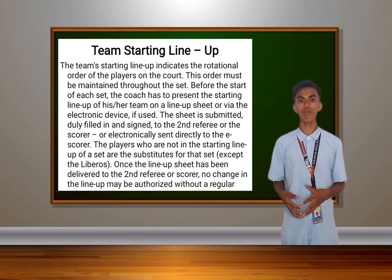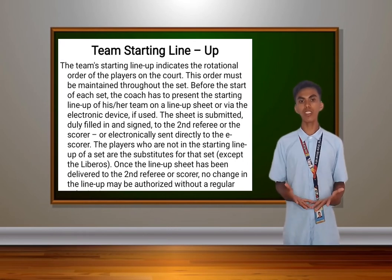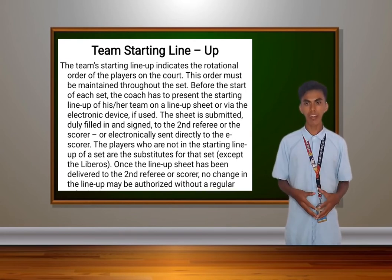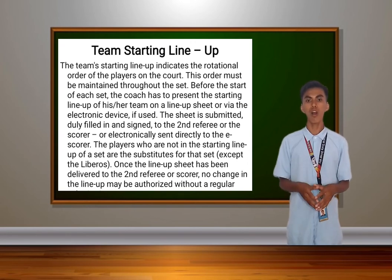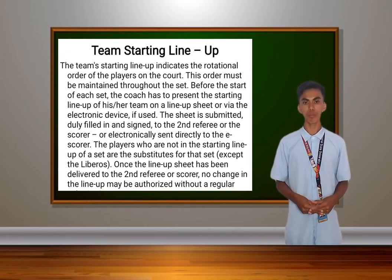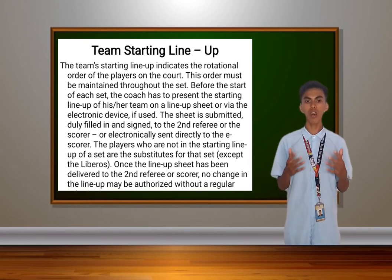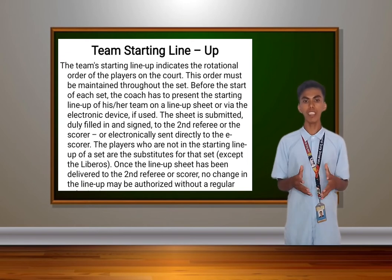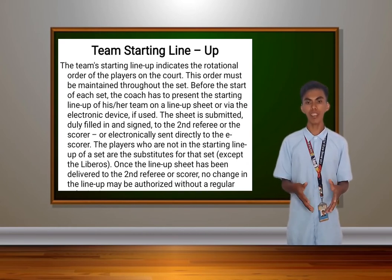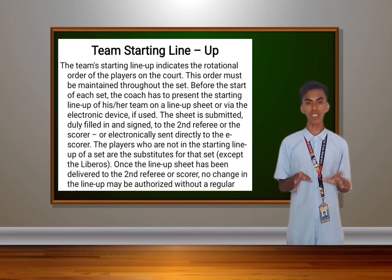Next is the team starting line-up. The team starting line-up indicates the rotation order of the players on the court, and this order must be maintained throughout the set. Before the start of each set, the coach has to present the starting line-up on a line-up sheet or via electronic device if used. The sheet is submitted, jury filed, and signed, and sent to the second referee or scorer. Players not in the starting line-up are the substitutes for the set, except the libero. Once the line-up sheet has been delivered, no change may be authorized without regular substitution.